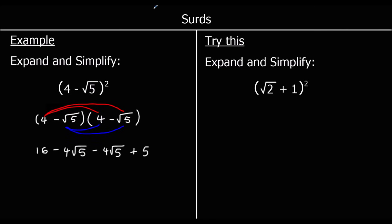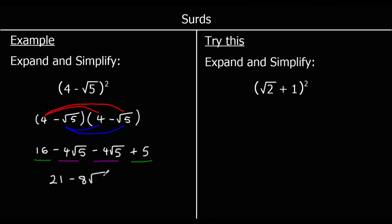Collecting the like terms: we've got two ordinary numbers and two root 5 terms. I'll do the numbers first: 16 plus 5 is 21. And then I've got negative 4 root 5 take away another 4 root 5. Negative 4 take away 4 is negative 8, so I've got minus 8 root 5. The answer is 21 minus 8 root 5.